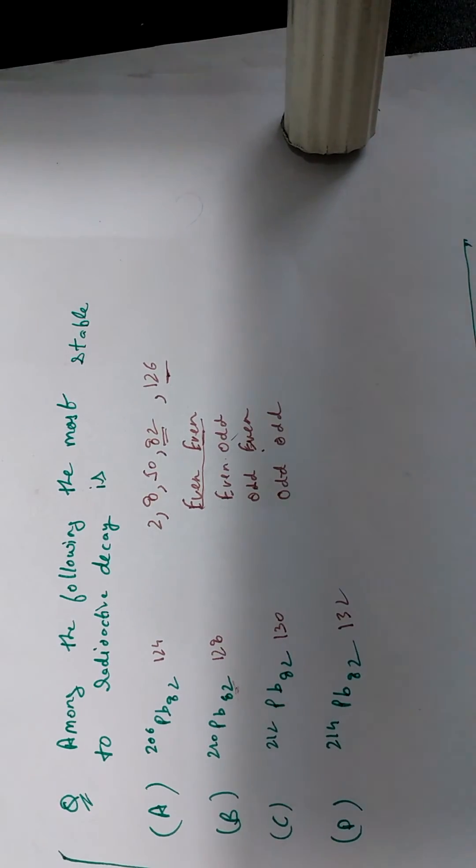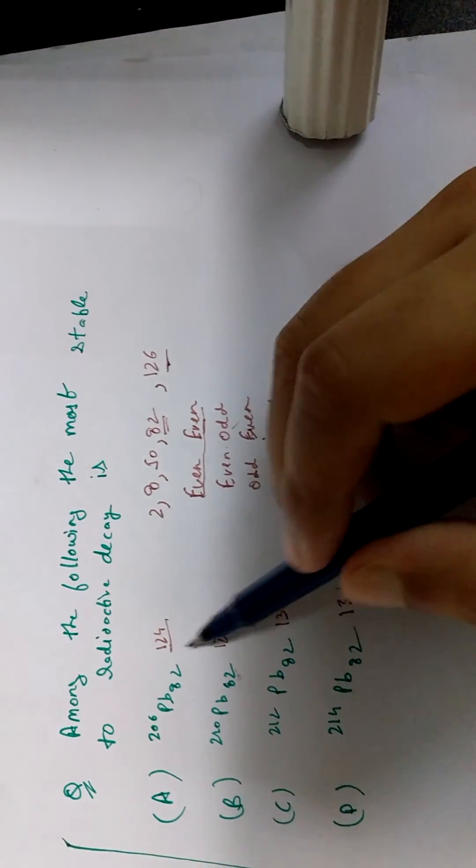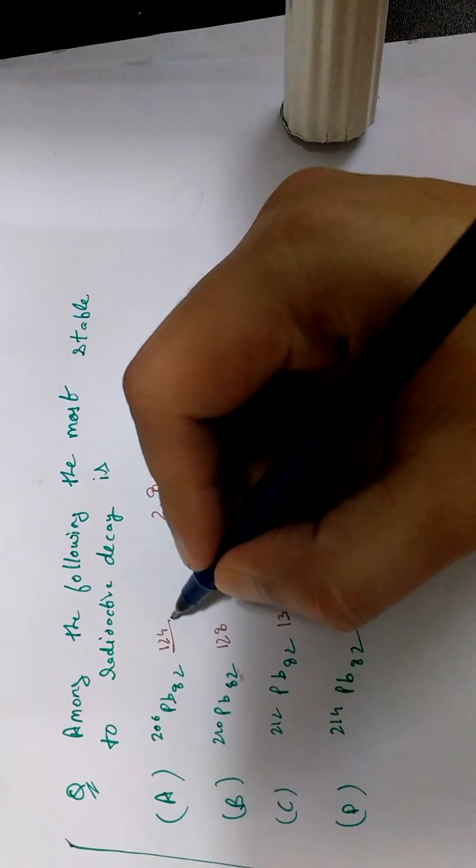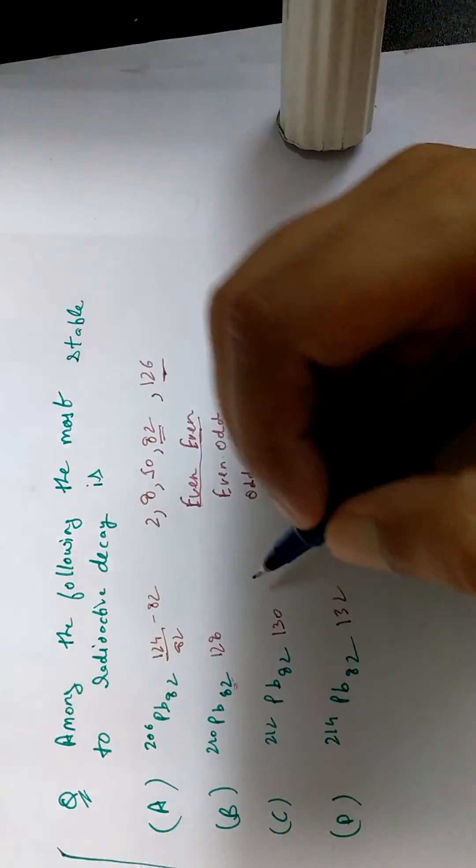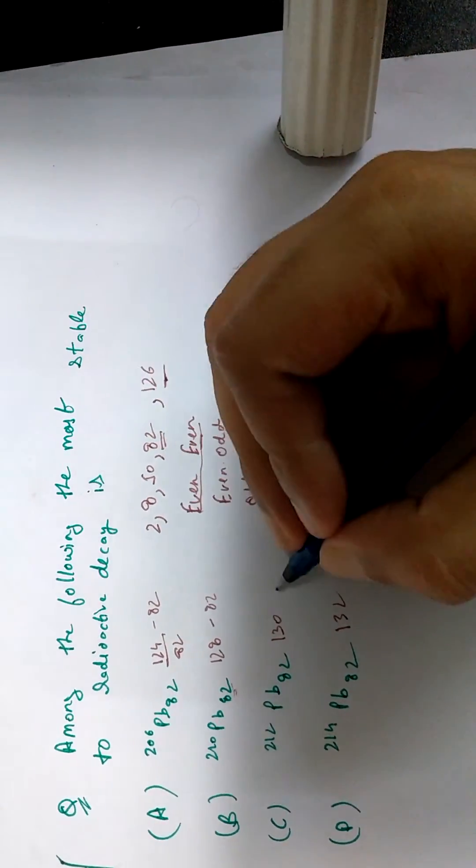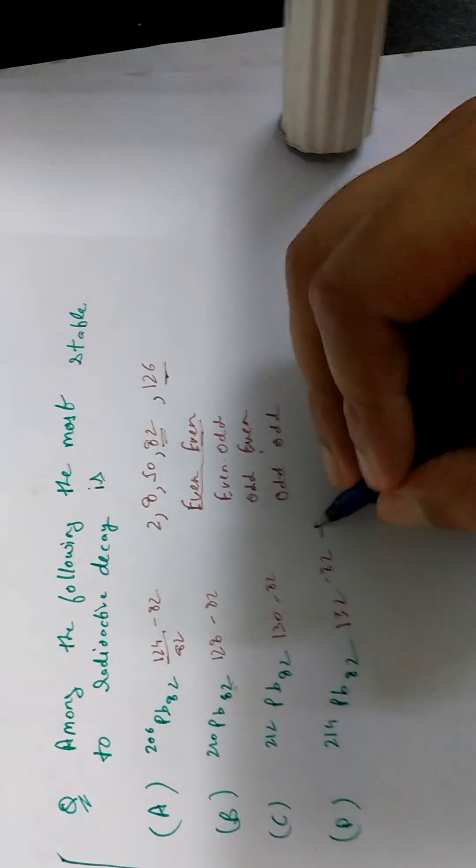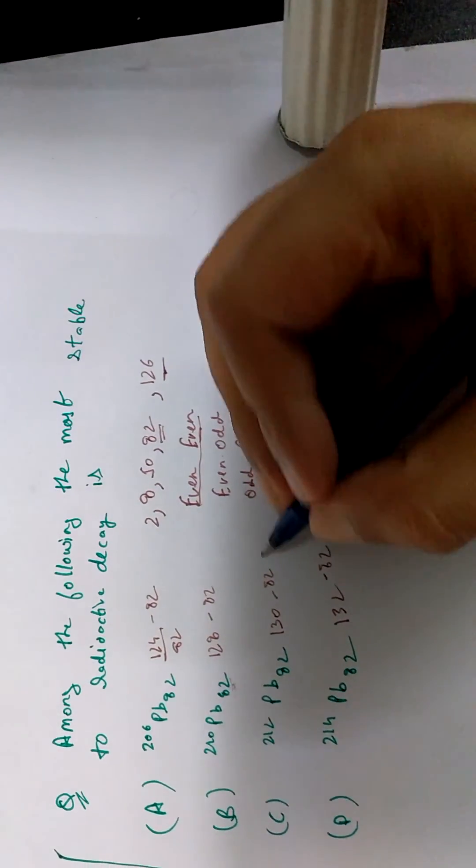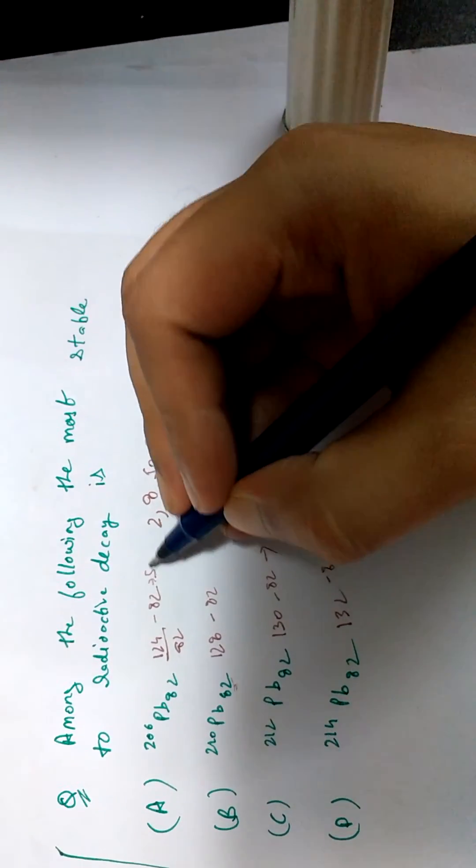Then how do we decide? Now, the lesser the difference between the number of neutrons and the number of protons. So here it's 82, right? If you just subtract over here, here also we subtract, here also we subtract, here also we subtract. And what we find is, the difference is the largest in this and the difference is the smallest for this element.